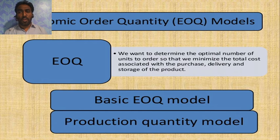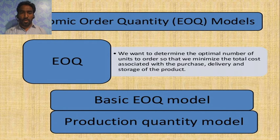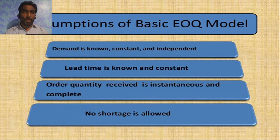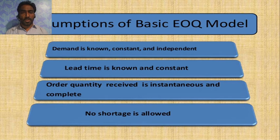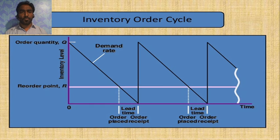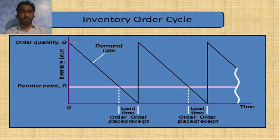The next topic is the Economic Order Quantity model, also known as EOQ. It is used to determine the optimum number of units to order so that we can minimize the total cost associated with the purchase, delivery, and shortage of a product. The basic EOQ model and production quantity model share assumptions: demand is known, constant, and independent; lead time is known and constant; order quantity is received instantaneously and completely; and no shortage is allowed. This slide shows the inventory order cycle, illustrating when to place the next order.